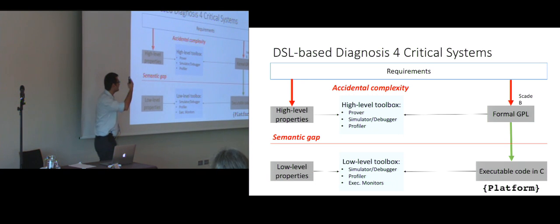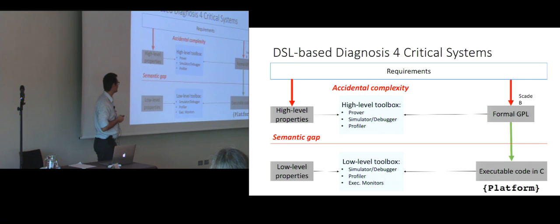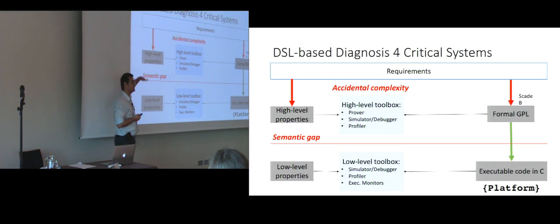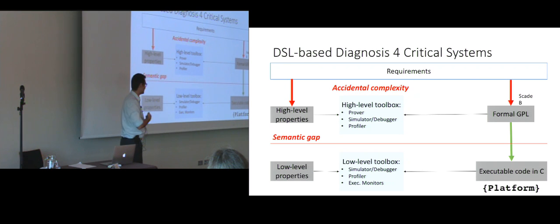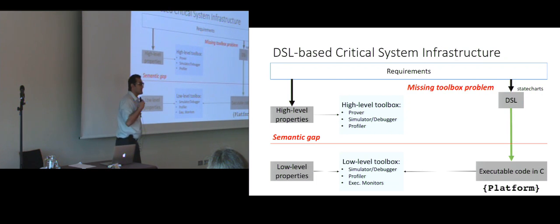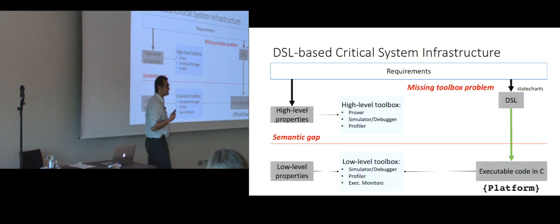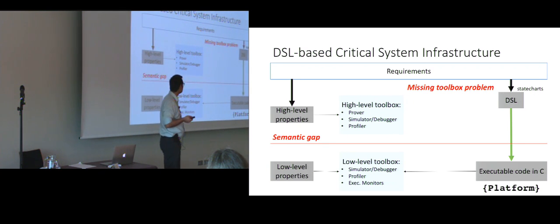In this situation we have two problems. First, we have an accidental complexity between the high level of the requirements and the implementation language, which is a general purpose language. Second, we have a semantic gap between the high level and the low-level execution code. We can address part of this problem by using DSLs like statechart, for instance.